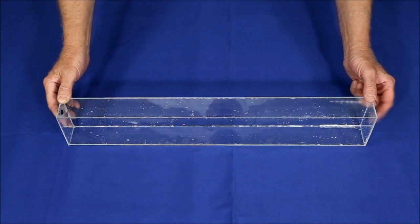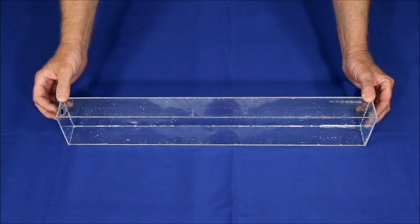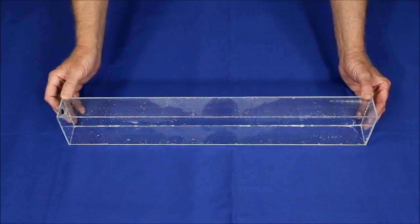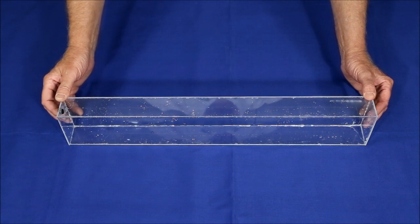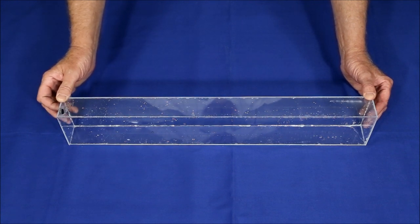After I had attached the solid end cap, but before attaching the end cap with a hole in it for the cork, I moved it on end and filled it with water to make sure that all the joints were waterproof. And they were. And then I went ahead and cemented on the end cap with a hole in it.